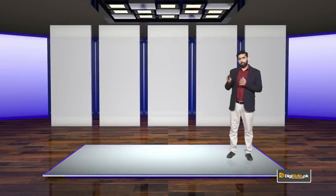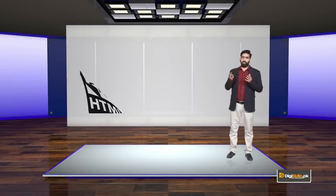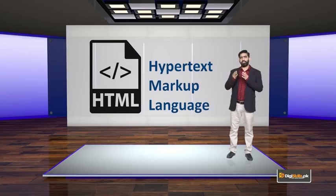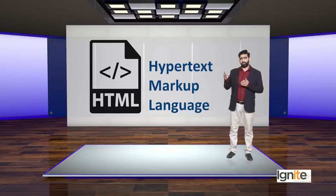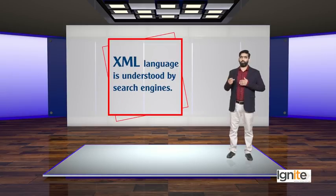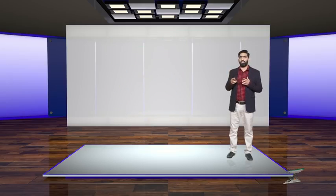XML sitemap is like an HTML sitemap, but it is a different language. HTML is basically a different language which can only be read by search engines. You can use an HTML sitemap or XML sitemap — the purpose is to keep the search engine informed with a list so that it can crawl your pages.